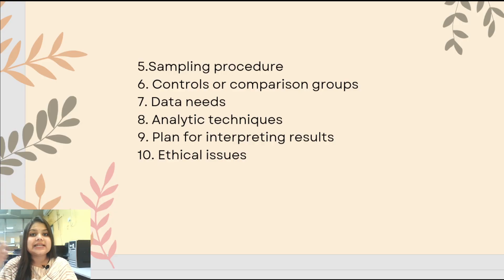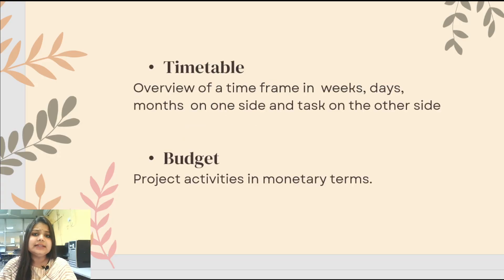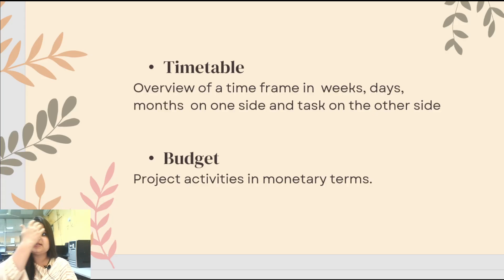You must also describe the control or comparison group — what is the difference between the group being tested and the comparison or control group. Then specify your analytic techniques, how you are interpreting results, and your ethical issues. Then we come to the timetable, where you mention the timeframe — for example, one to four months for data collection — with the time on the left and the work to be done on the right.